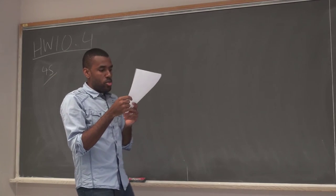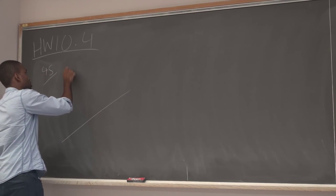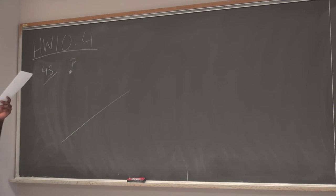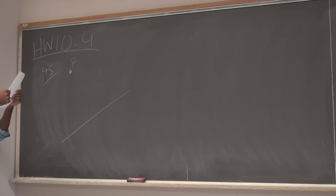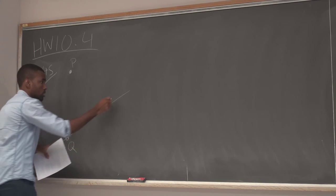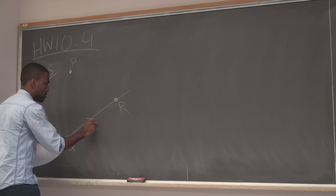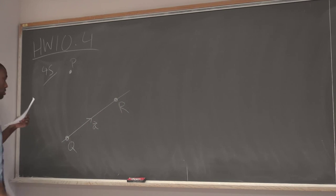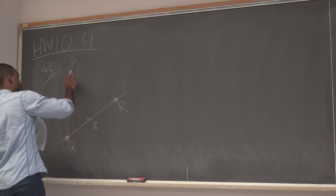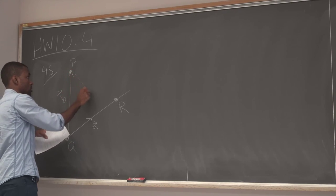In problem 45, we want to figure out the distance from a point to a line, where the point is not on the line. The line passes through points Q and R. Vector A goes from Q to R, vector B goes from Q to P. We want to find D, the distance.